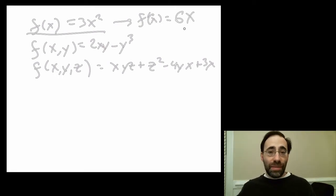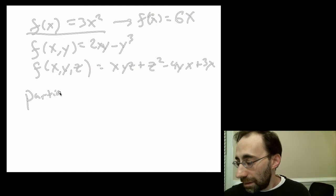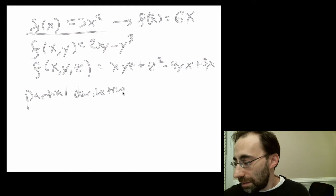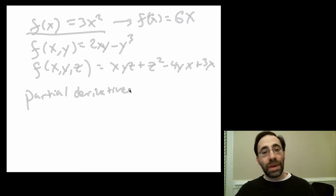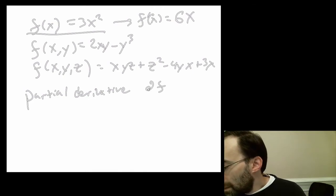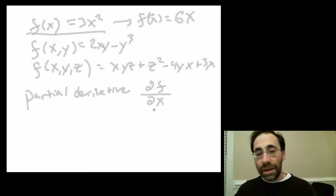But what happens when you have more than one variable? Well, it turns out, you can introduce something called a partial derivative. Partial derivative. And a partial derivative is a derivative of only a part of the function. Specifically, the part related to a single variable. You write it like this. That kind of curly d is read partial. So you read that partial f, partial x. As compared to df, dx. This is partial f, partial x. Or the partial derivative of f with respect to x. And what it means is, take the derivative with respect to x, treating every other variable as if it were a constant.